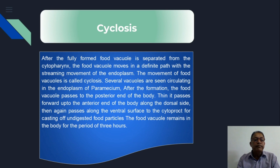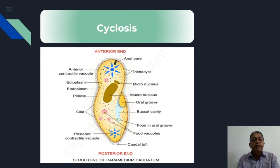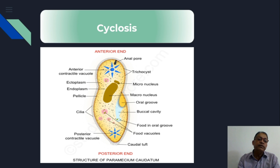The food vacuole remains in the body for at least three hours. In the animal body diagram, we observe pink-colored structures known as food vacuoles, and blue-colored structures located at the anterior and posterior ends known as contractile vacuoles — the osmoregulatory device. The dark yellowish kidney-shaped structure is the macronucleus or meganucleus, associated with which is the micronucleus. The yellow-colored structure on the right side is the oral groove, buccal cavity, and cytopharynx, and at the end of the cytopharynx we observe the formation of food vacuoles.